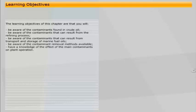The learning objectives of this chapter are that you will be aware of the contaminants found in crude oil, be aware of the contaminants that can result from the refining process, be aware of the contaminants that can result from transport and storage of marine fuel oils, be aware of the contaminant removal methods available, and have a knowledge of the effect of the main contaminants on plant operation.